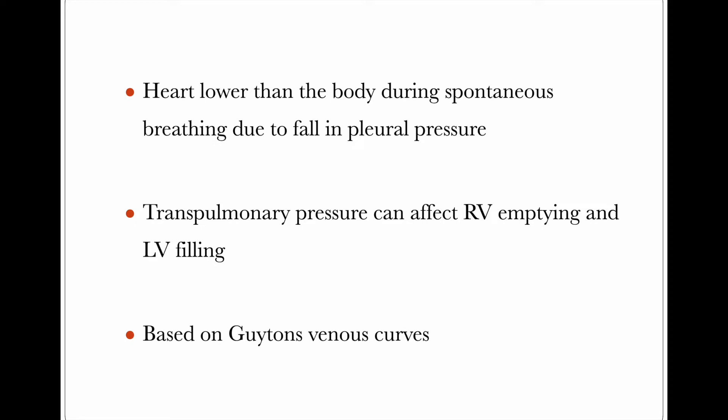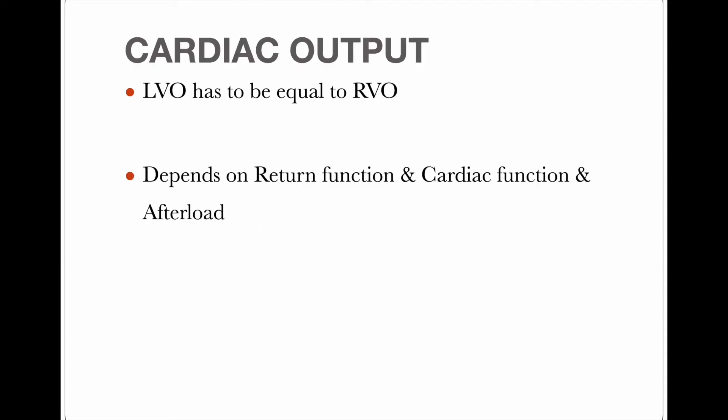This discussion can be illustrated using Guyton's venous curve. What Guyton did was superimpose the venous return curve on the cardiac output curve and found interesting results. The left ventricular output has to be equal to the right ventricular output. If the left ventricular output is lower than the right ventricular output, that volume stays back in the lungs and causes pulmonary edema. This depends on the return function, cardiac function, and afterload.